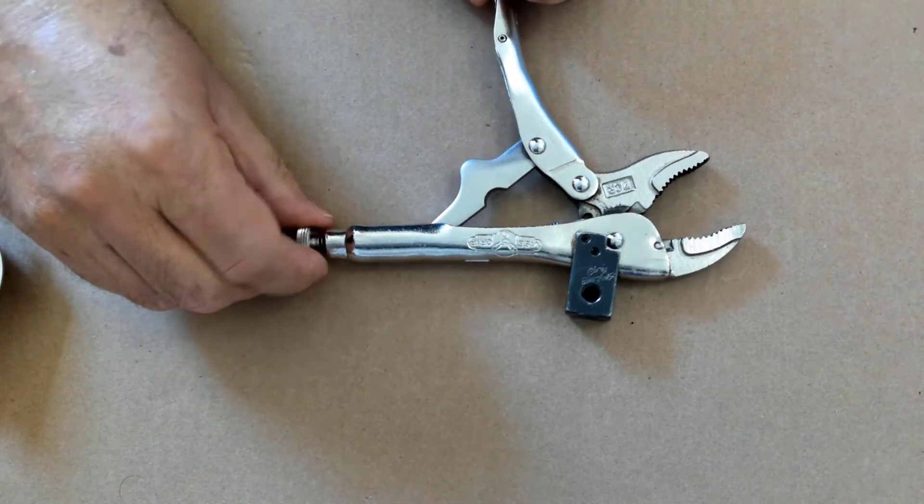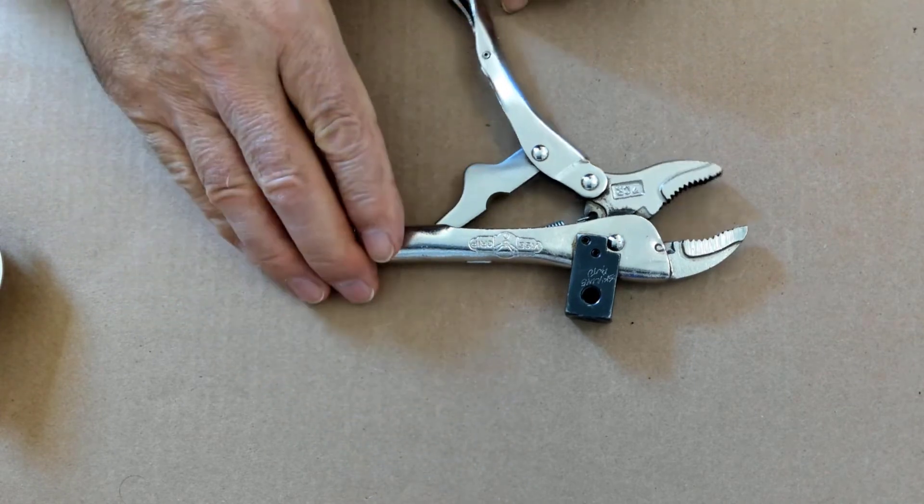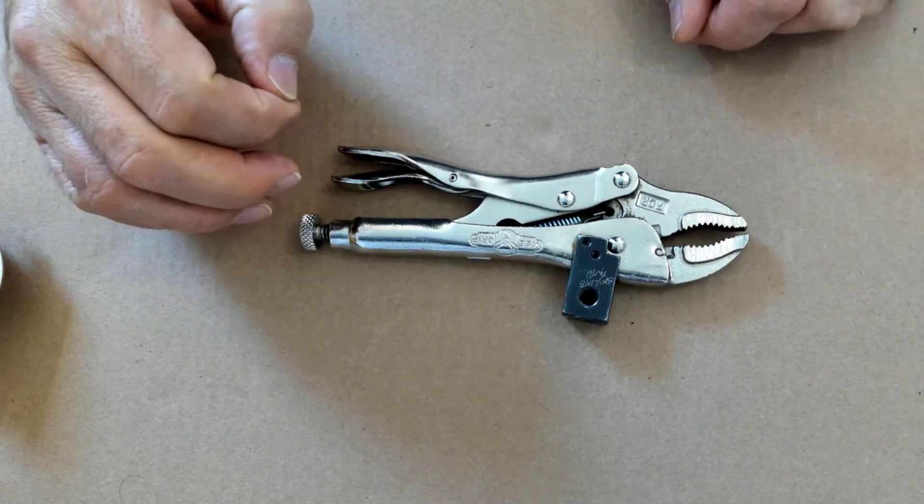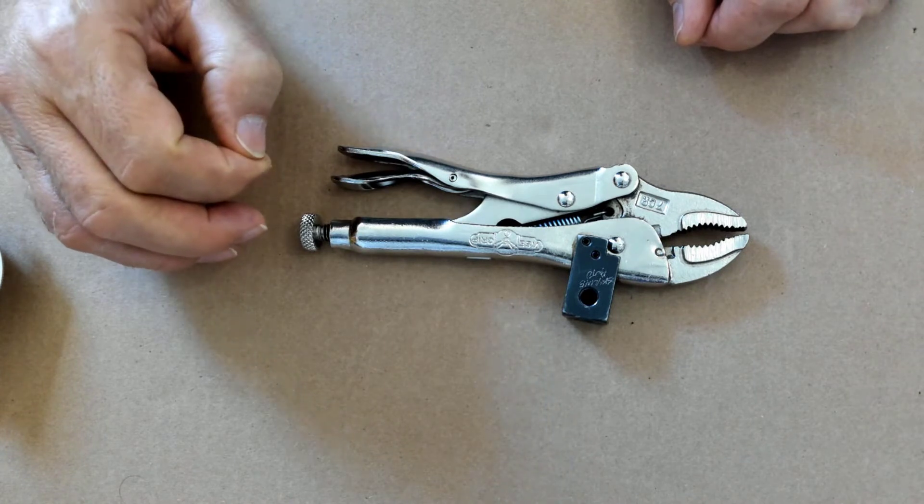If I loosen the threaded screw, as I close the vise grips, the gap gets larger. This is used for adjusting when we want to clamp onto an object.